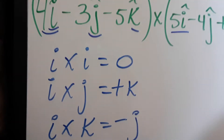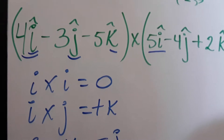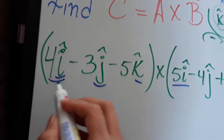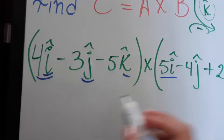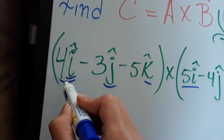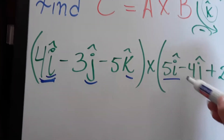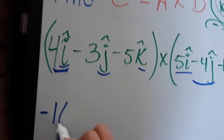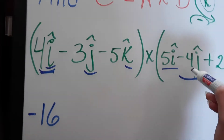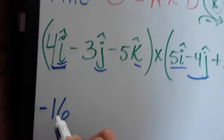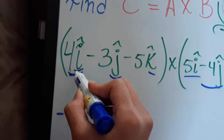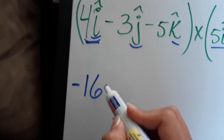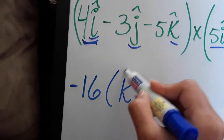So we're going to have 4i cross 5i — that's 0. Then we go to the next one: 4i cross negative 4j. That's going to be negative 16, because it's 4 times negative 4. And then i cross j, as we saw, is positive k. So we're going to have a positive k.